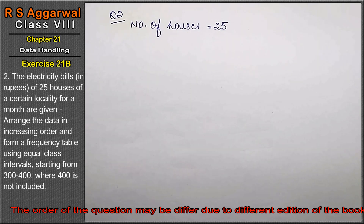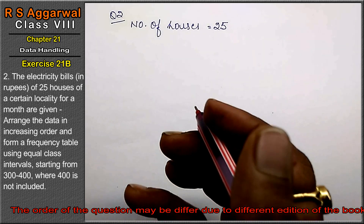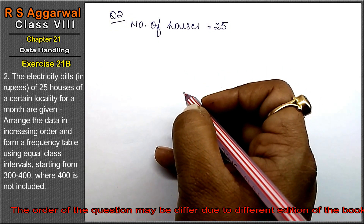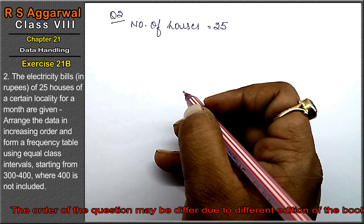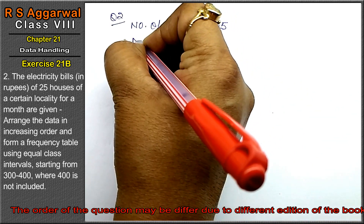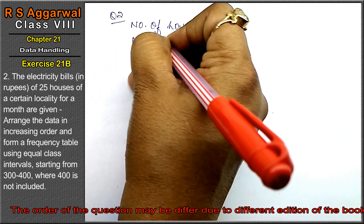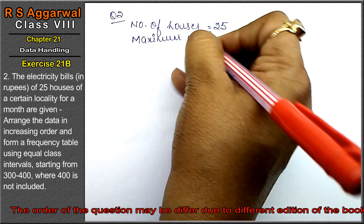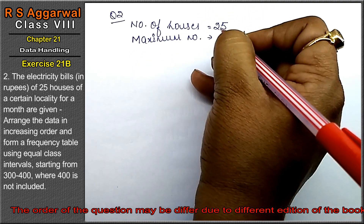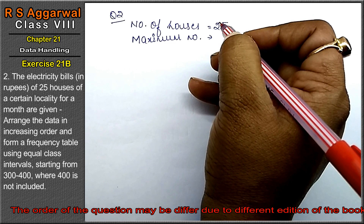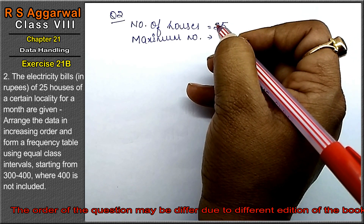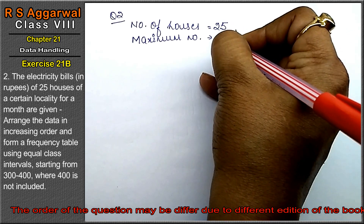We will create a frequency table directly. We will take the maximum number and maximum interval. The maximum number — looking at the data — we will keep the range up to 800, so intervals go from 300 to 800.